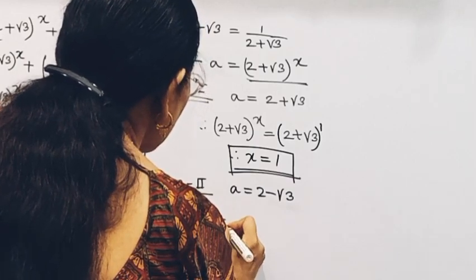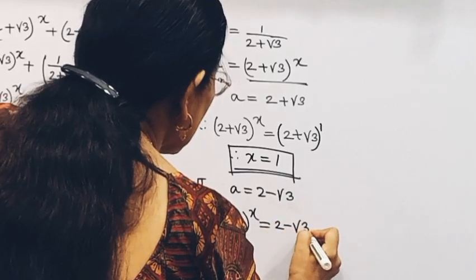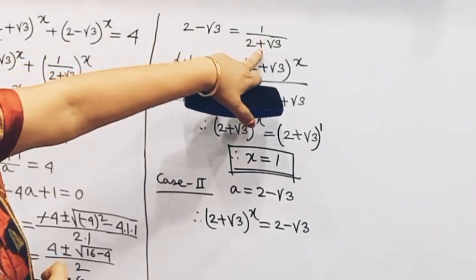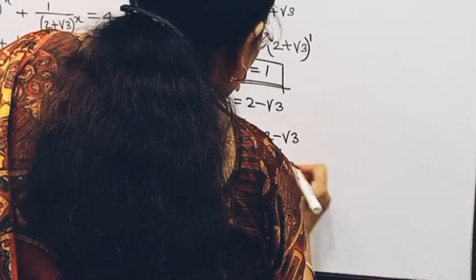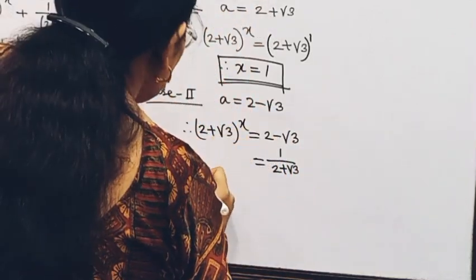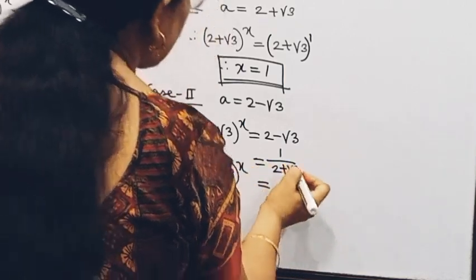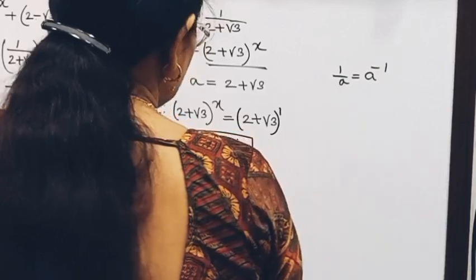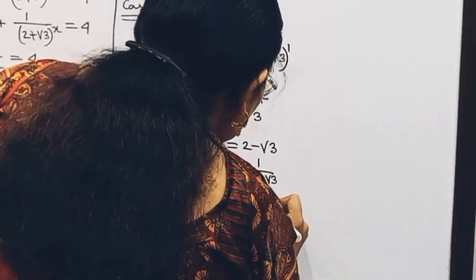We write a to the power n equals 2 - √3, which equals 1 divided by (2 + √3). Since 2 + √3 times (2 + √3) equals 1 by a, we have 1 divided by (2 + √3) is greater than the base (2 + √3).